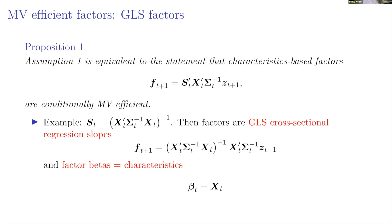You get the same MVE portfolio as from individual stocks. In practice, an easy way to construct these GLS factors is to run a cross-sectional GLS regression — take returns, regress on characteristics, and use the covariance matrix sigma as the GLS weighting matrix. This gives you the GLS factors, with betas equal to X.